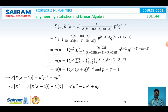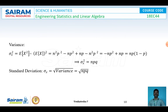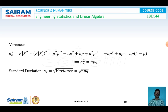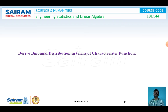Now finding variance: Var(X) = σ²_X = E[X²] − (E[X])² = (n²p² − np² + np) − n²p². The n²p² terms cancel, leaving −np² + np = np(1−p). Since 1−p = q, we get Var(X) = npq. The standard deviation is σ_X = √Var(X) = √(npq).